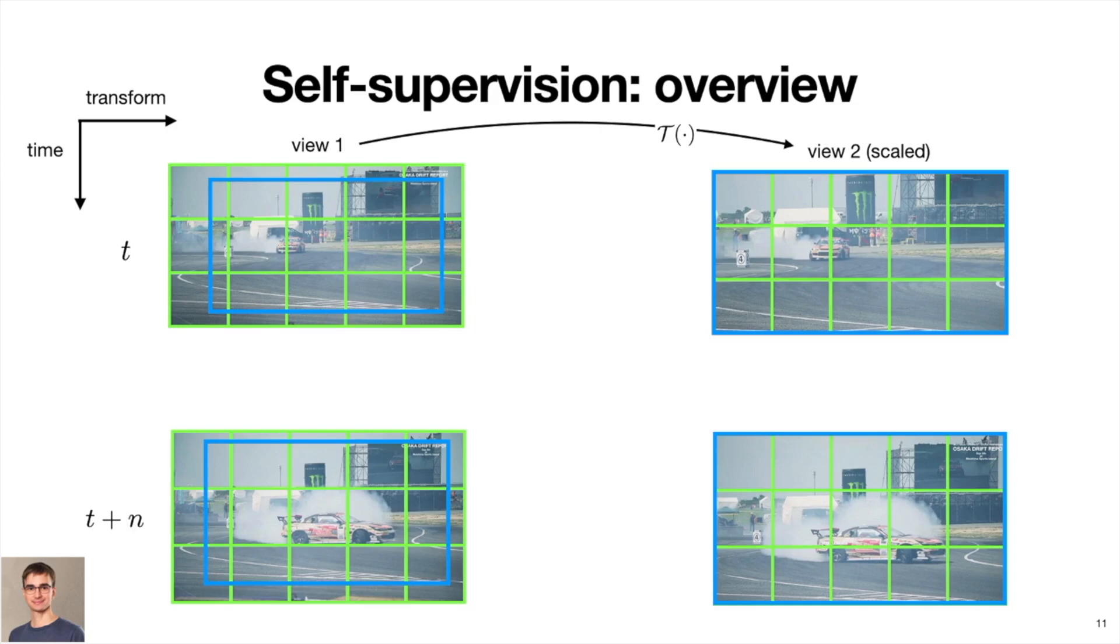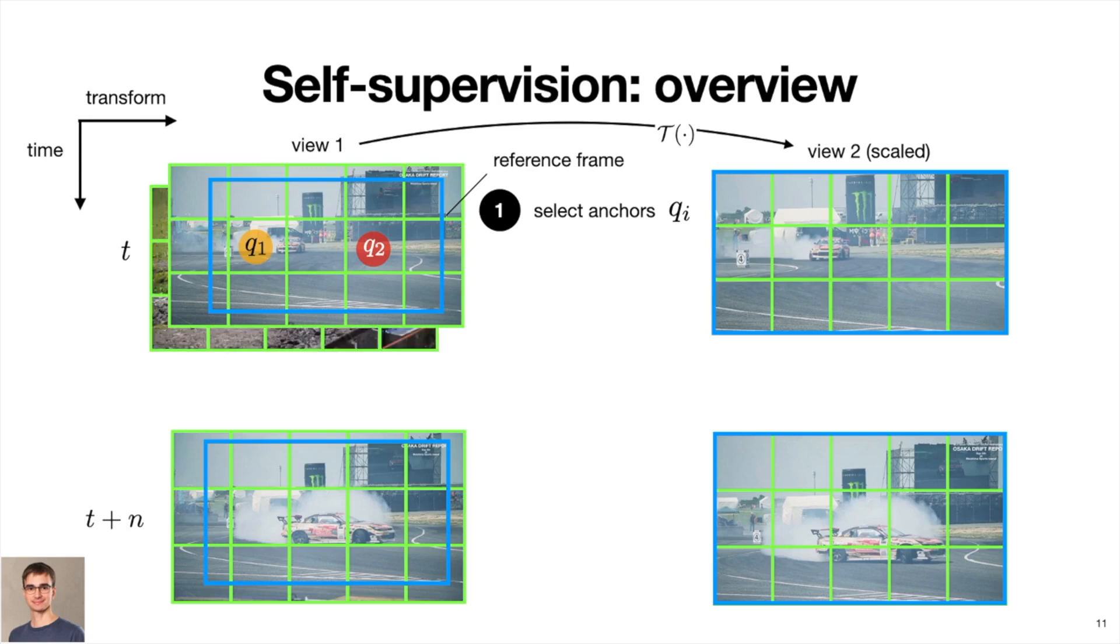We then select anchors that will represent cluster centers from this reference frame. These anchors are simply selected from the set of feature vectors produced by a fully convolutional network. Note that these steps are performed for a number of video sequences in parallel, hence our collection of anchors will have origins in multiple video sequences.